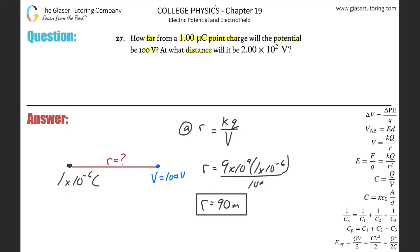At what distance will it be 2 times 10 to the 2 volts? Okay. So all that's going to happen now is that instead of this, we're going to change this to 2 times 10 to the 2. All right. In other words, 200.